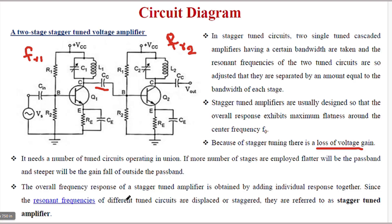The overall frequency response of a stagger tuned amplifier is obtained by adding the individual responses together. Since the resonant frequencies of different tuned circuits are displaced or staggered, this is referred to as a stagger tuned amplifier.